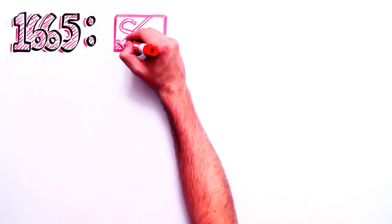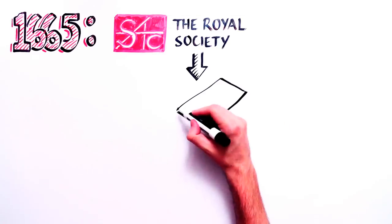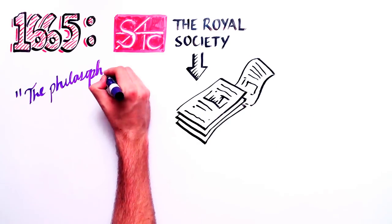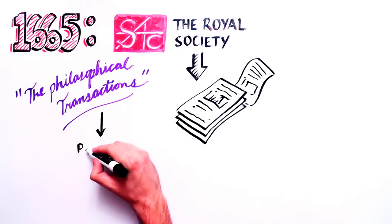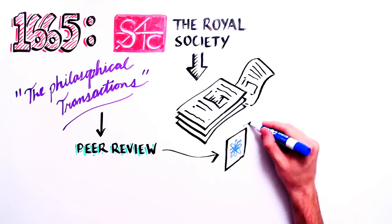In 1665, the Royal Society of London created the first scientific journal called Philosophical Transactions to facilitate the transmission of new scientific findings.